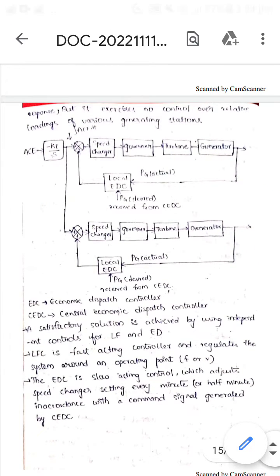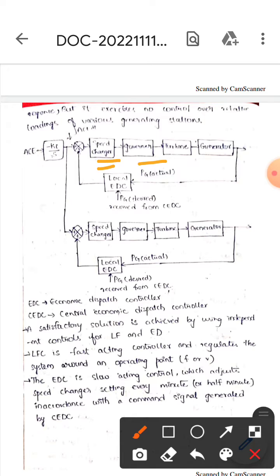This is speed changer, this is governor, this is turbine, this is generator, this is the local EDC, this is PGA actual, this is PG design. Here we get PGA actual, whereas here we will get PGA design.